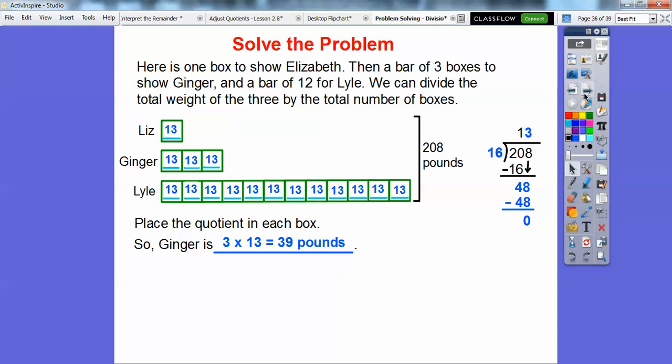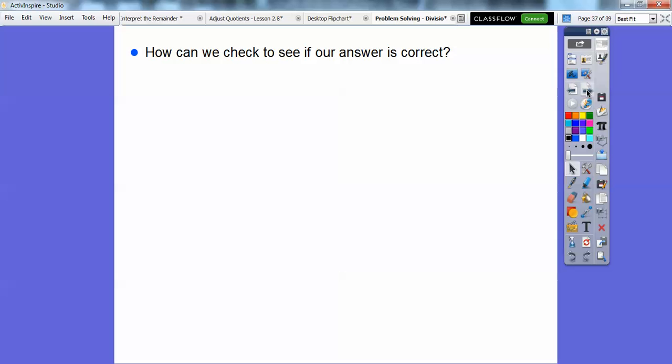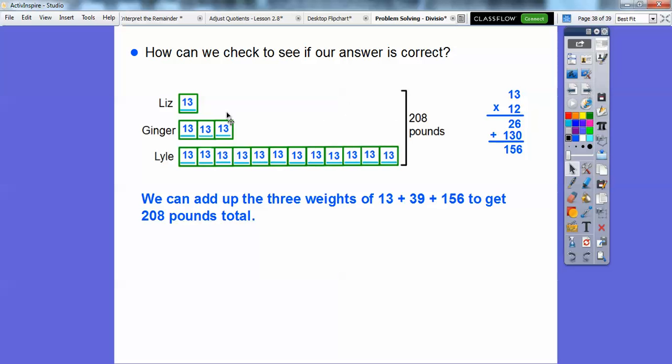How can we check to see if our answer was correct? Well, we know that this is Elizabeth, this is Ginger and this is Lyle, so we can add up all three weights. We know Ginger is 39 and here's Lyle over here, 13 times 12, he's 156 pounds. So we add all those three numbers up and it totals up to our grand total of 208 pounds.